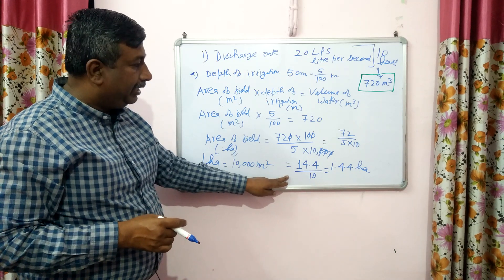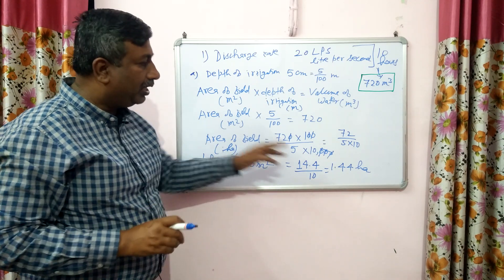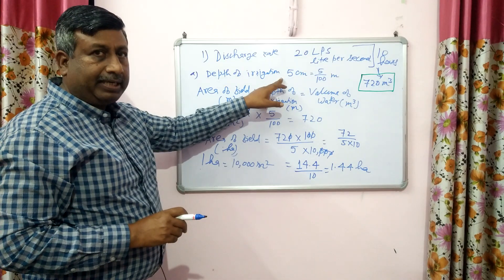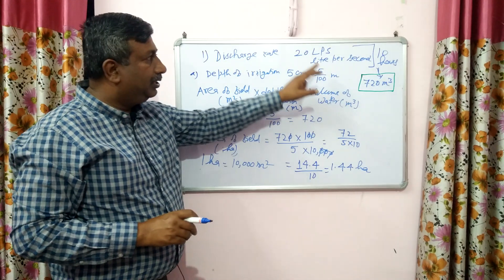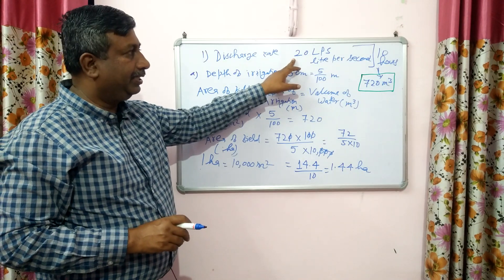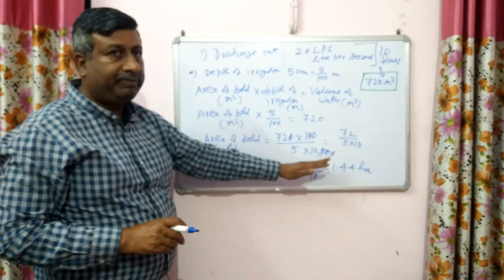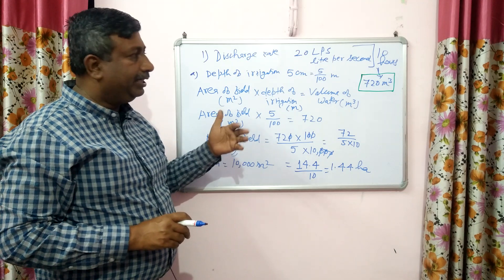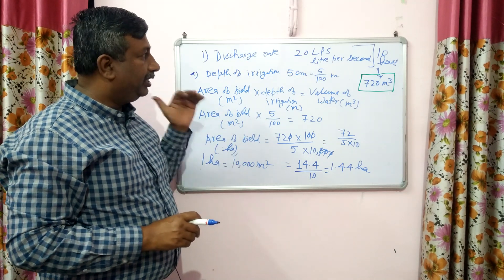So the result is 1.44 hectares. It means 1.44 hectare area can be irrigated to a depth of 5 centimetres in 10 hours if the discharge rate is 20 litres per second. If any quantity is changed then the answer will be different.